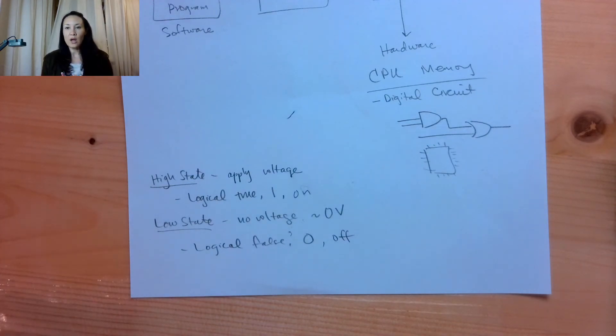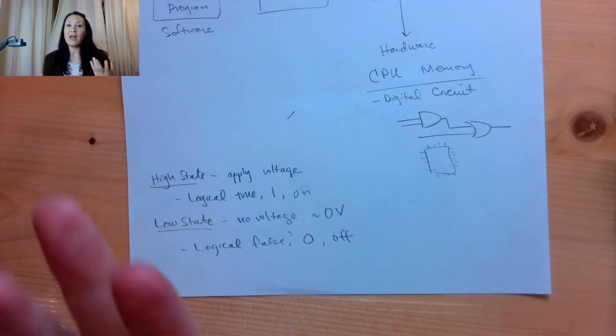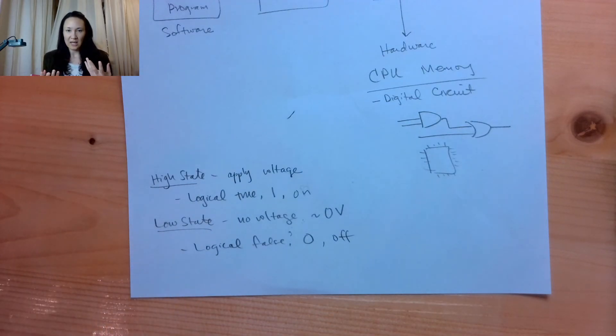So in binary, we can encode numbers. We can encode positive, negative numbers, floating point numbers, which means it has a decimal point. We can also encode characters and sentences, and once we take all this information that you and I understand in the English language and put it into computer language in the forms of zeros and ones, like long strings of zeros and ones, then we can actually operate on that.